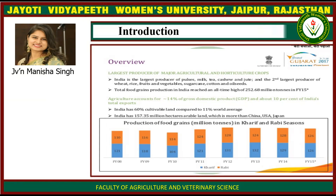Total food grains production in India reached an all-time high of 256.68 million tons in FY15. Agriculture accounts for 14% of GDP and about 10% of India's total exports. India has 60% cultivable land compared to the 11% world average, and 157.35 million hectares of arable land — more than China, USA and Japan. This chart shows the production of food grains in million tons in Kharif and Rabi regions, where Kharif is the summer crop and Rabi is the winter crop.